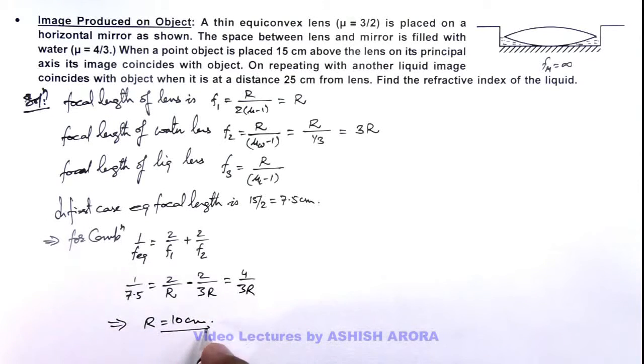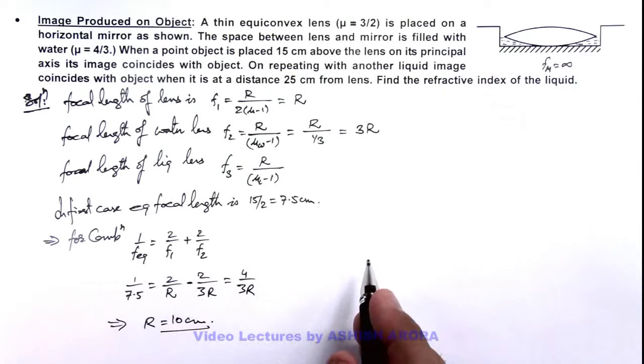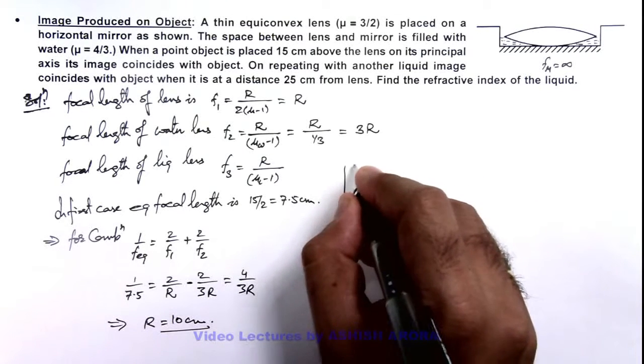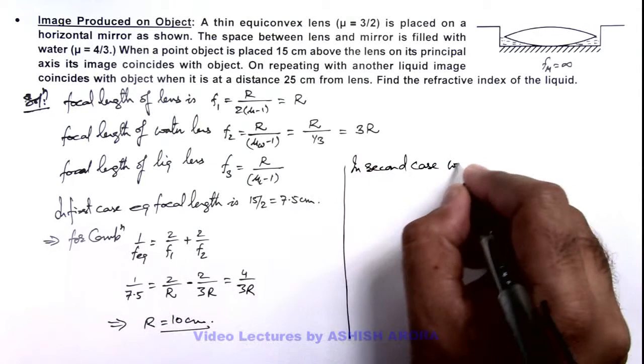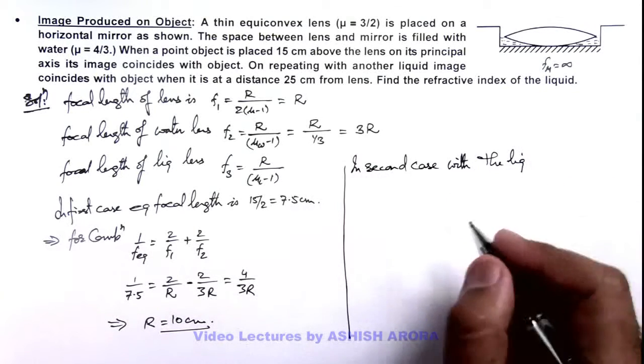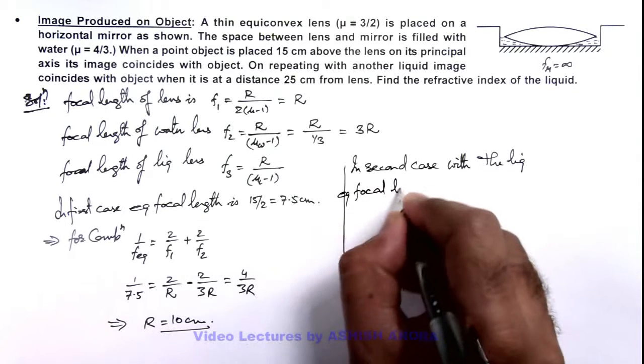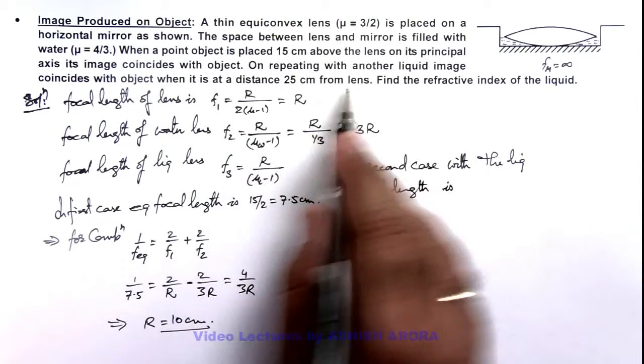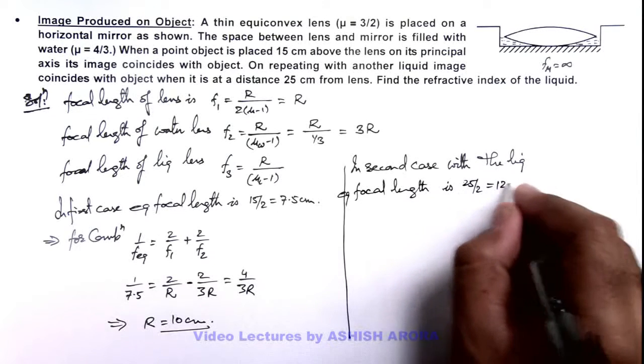So we have got the radius of curvature of every surface in this system for the lens. And here if in second case we analyze the same situation then we can see, in second case with the liquid we can write the focal length, equivalent focal length is - here it is given as 25 centimeter as 2f, so this will be 25/2 that is equal to 12.5 centimeter.